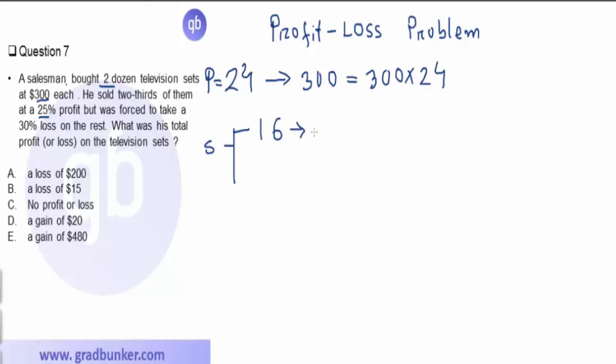That means 300 multiplied by 1.25 multiplied by 16. For the remaining portion, the price is 0.7.